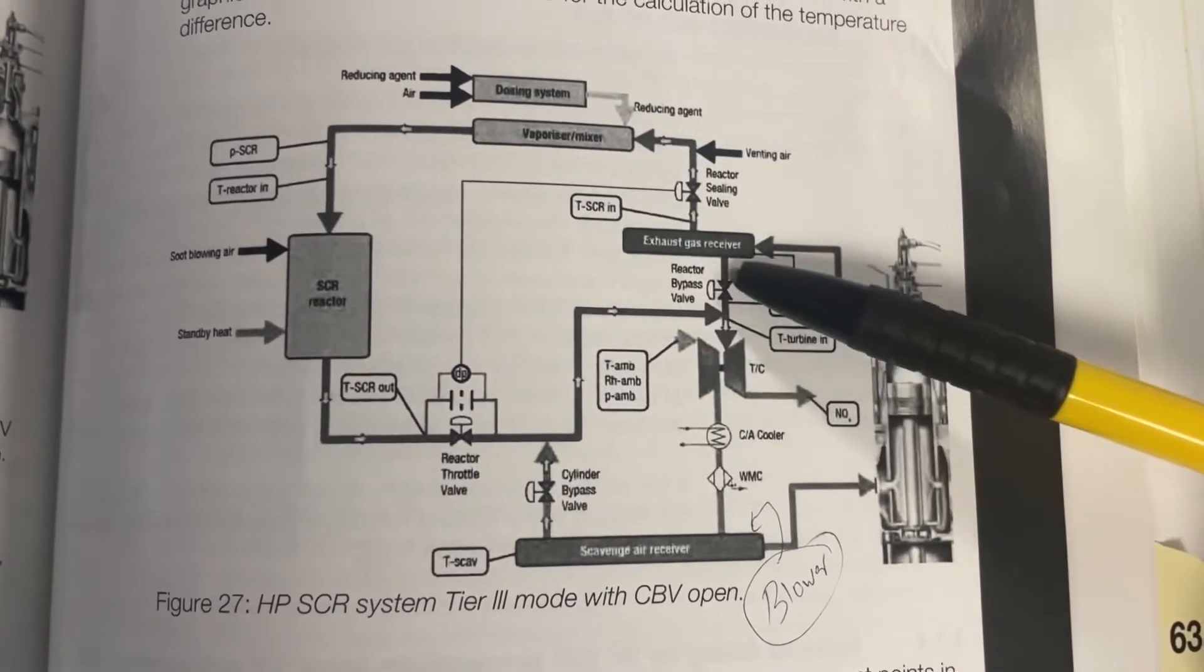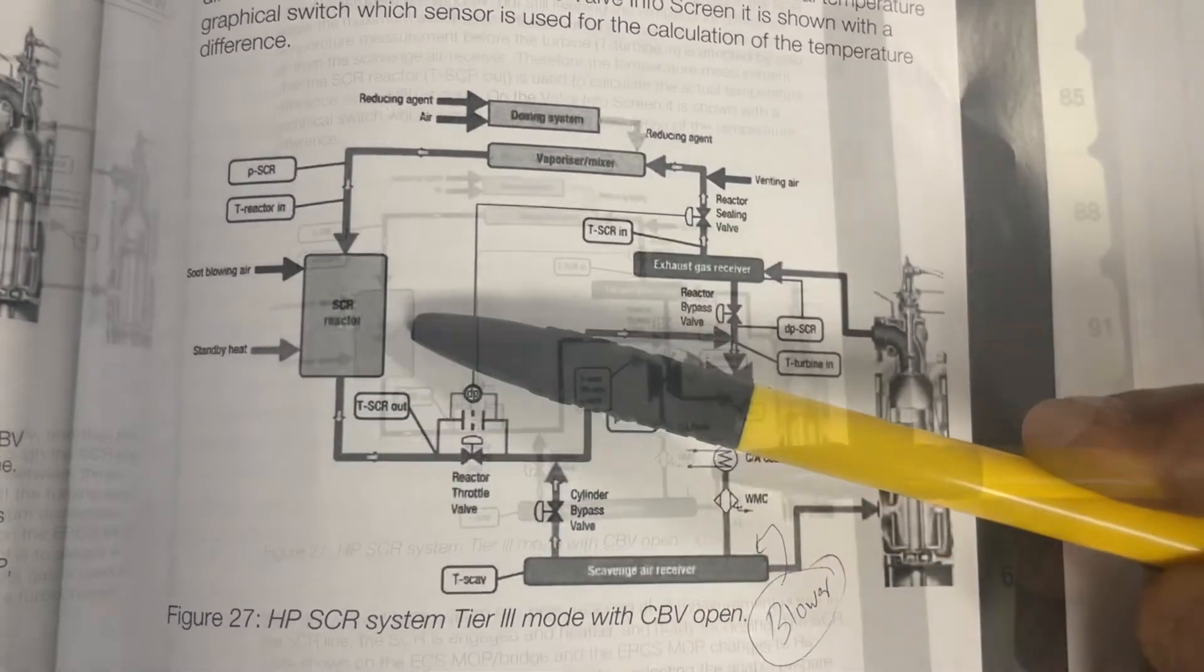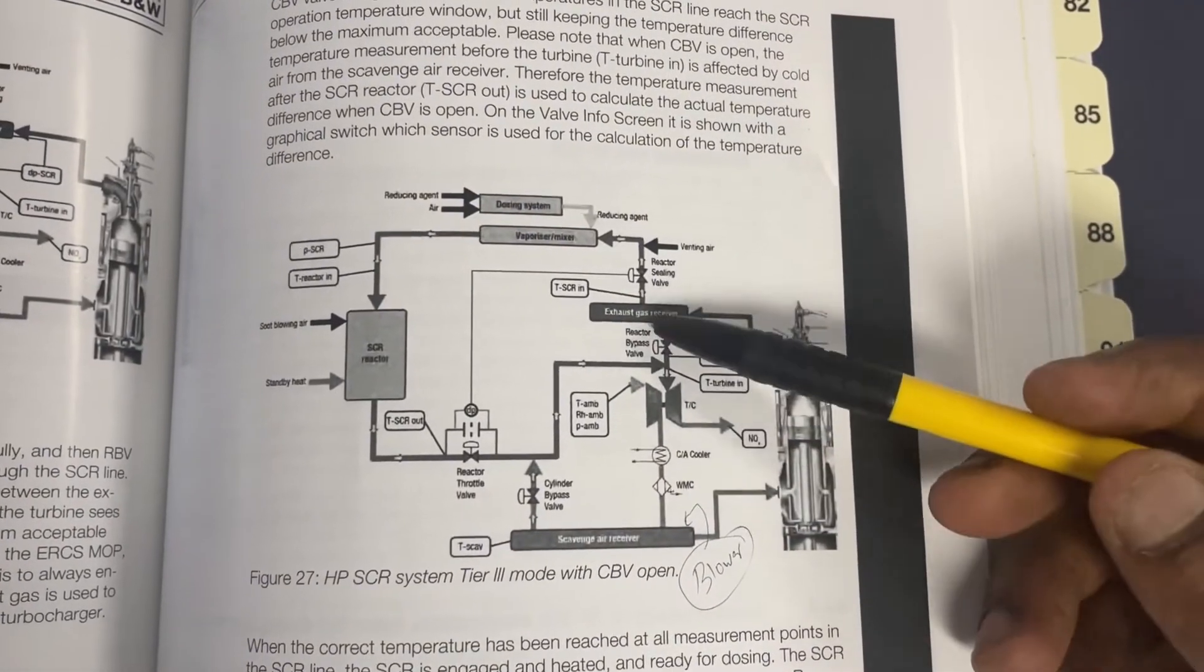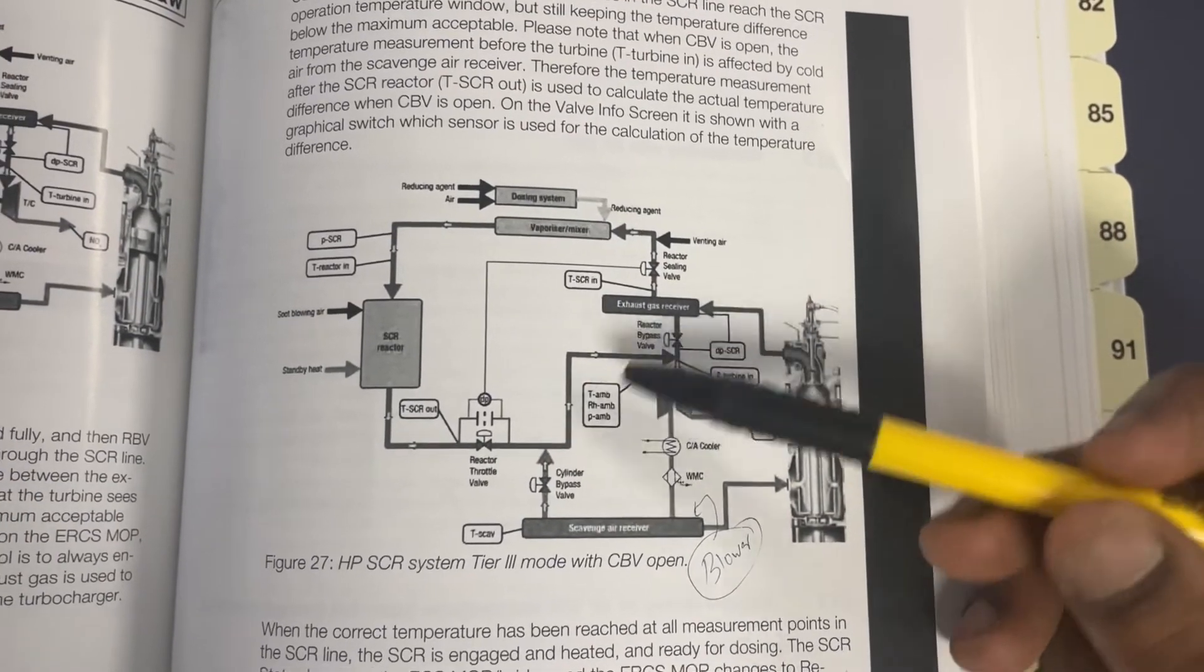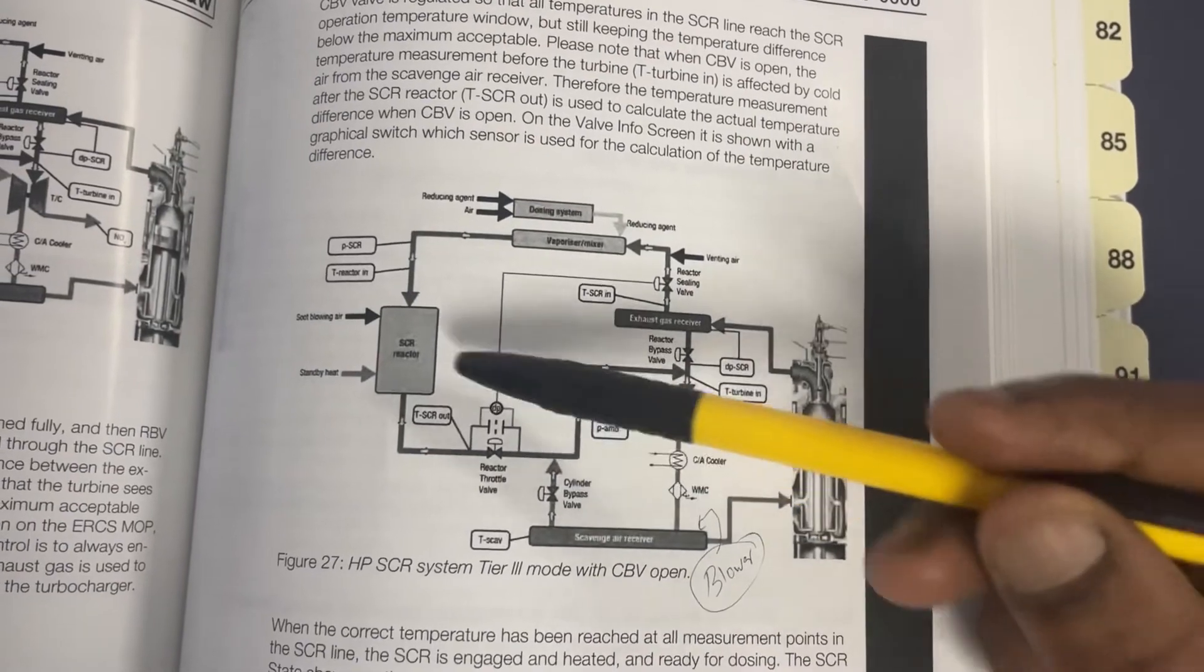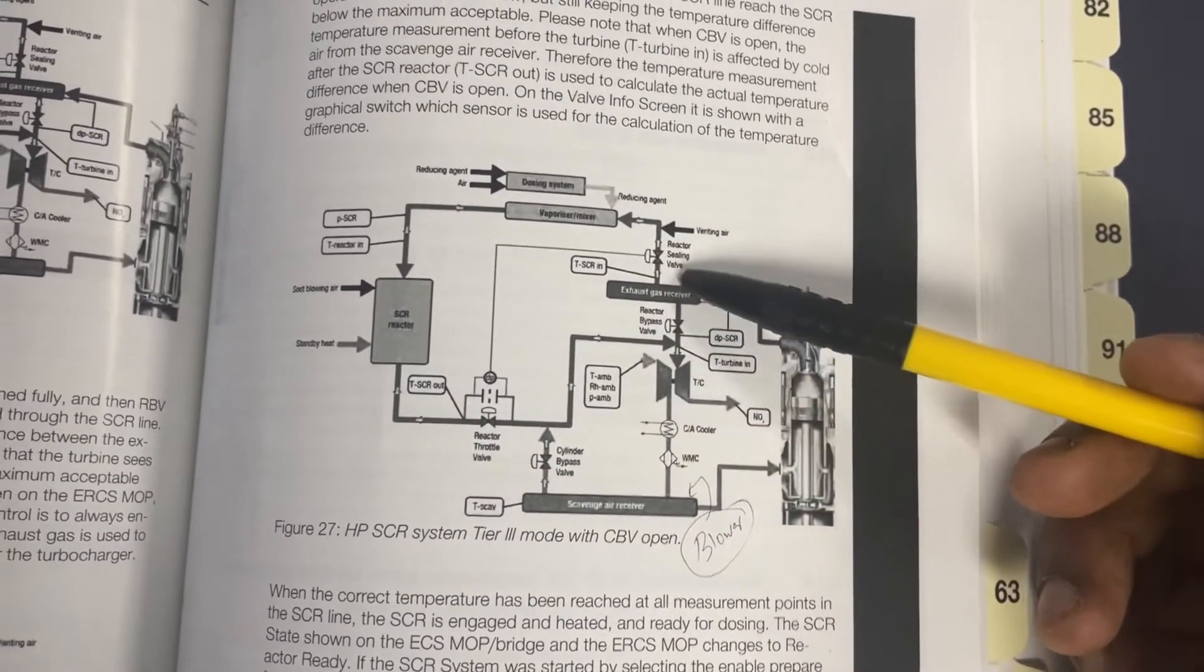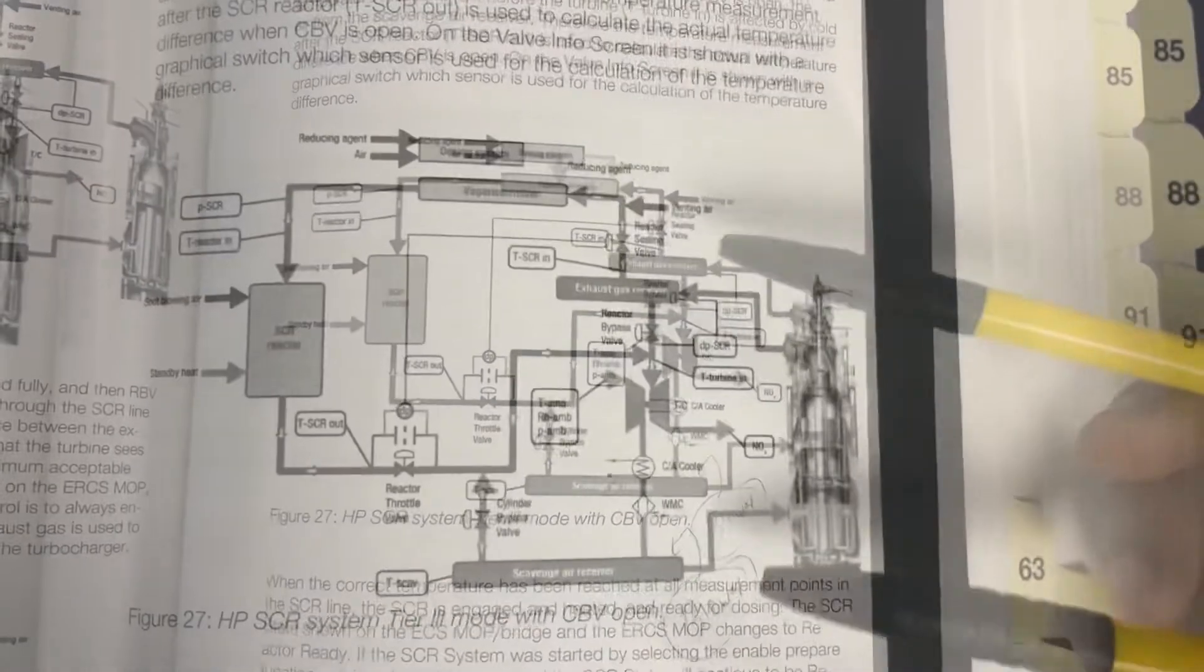So the NOx reduction will reduce. In order to prevent this RBV opening and NOx reduction being reduced, the CBV will temporarily open to heat up and prepare the SCR reactor for higher exhaust gas temperature.